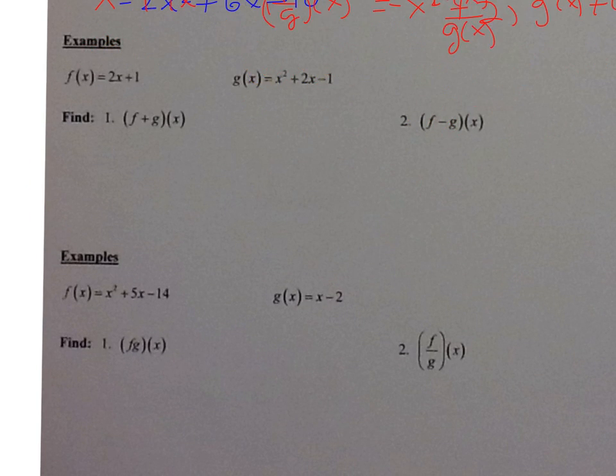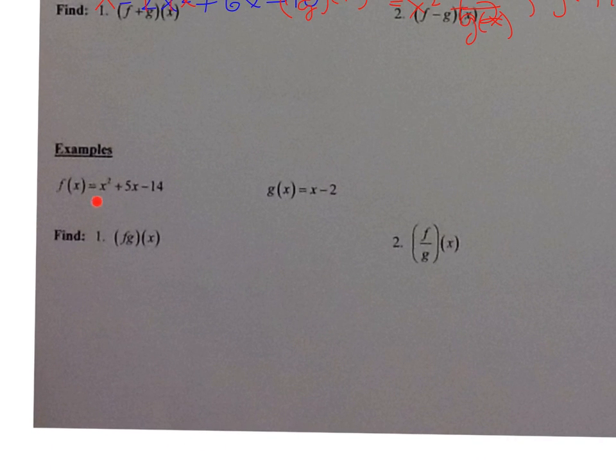So I have a couple of new functions. I have f of x equals x squared plus 5x minus 14 and g of x equals x minus 2. Okay, so we're going to first multiply f times g of x. So I'm going to multiply. I like to multiply trinomials and binomials. I like to do it up and down.